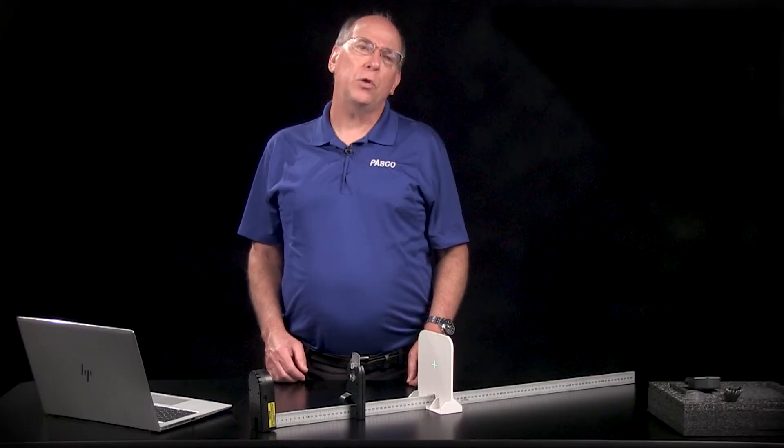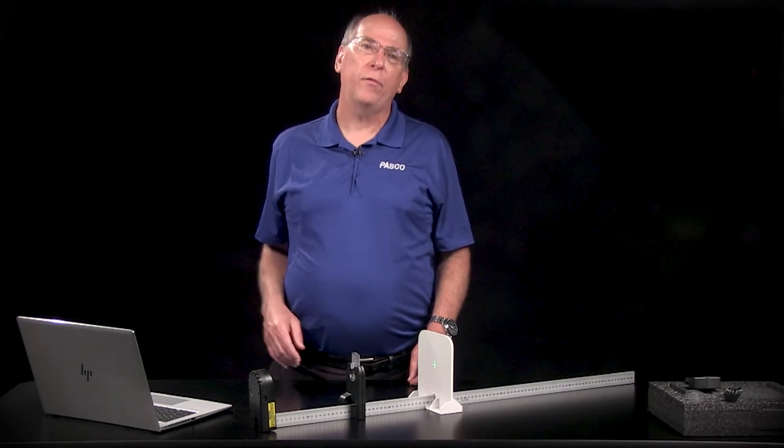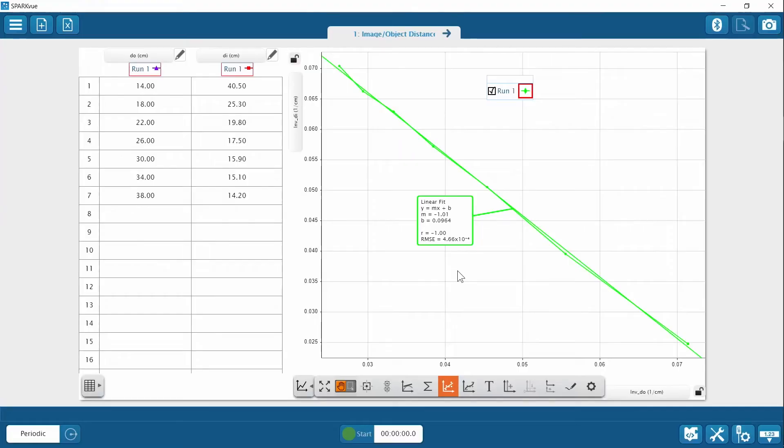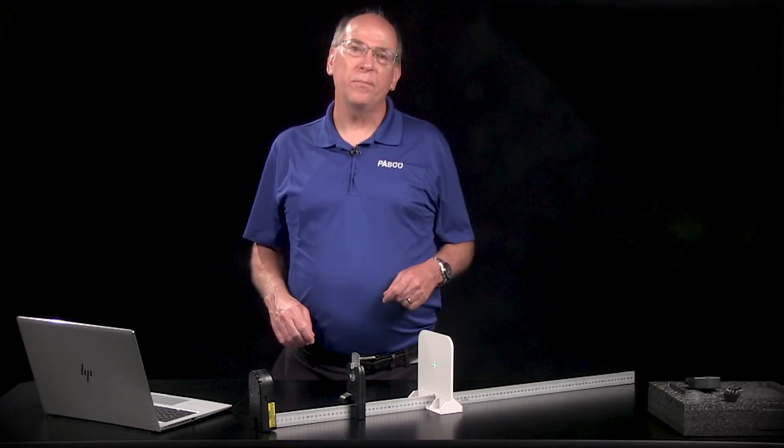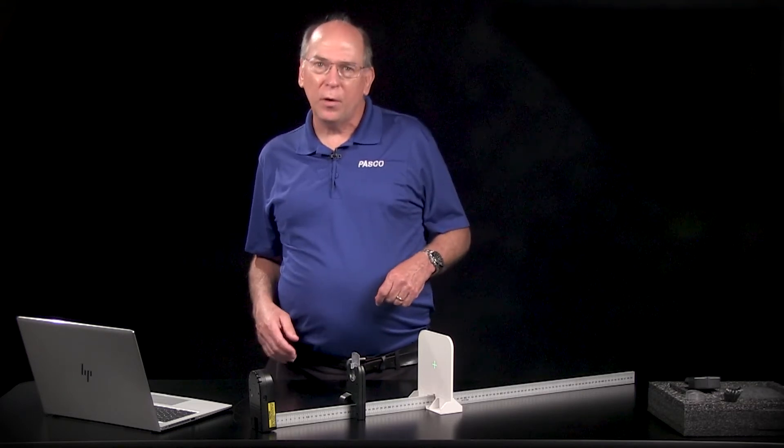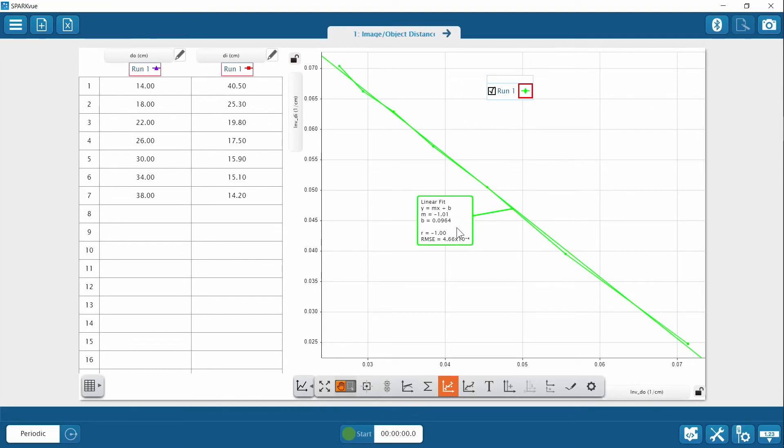Students develop the thin lens equation using the equation of their graph. They find that the slope is almost equal to negative 1, negative 1.01, and dimensionless. The y-intercept has the same value and units as the inverse of the focal length - in this case, about 0.1.